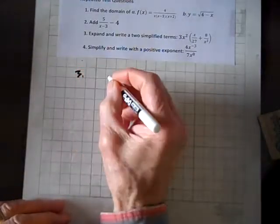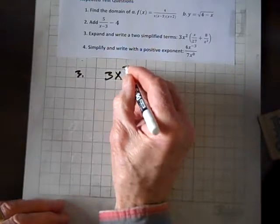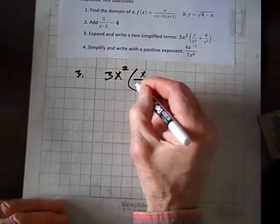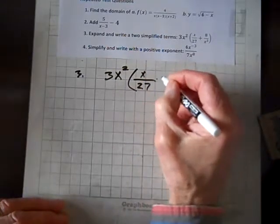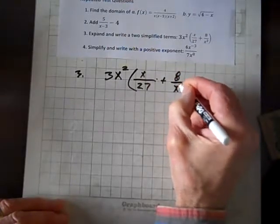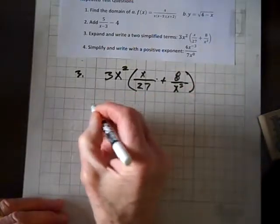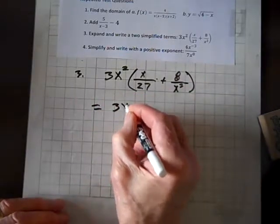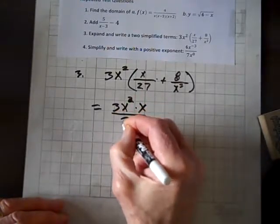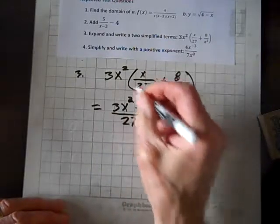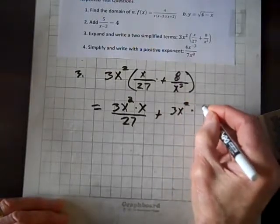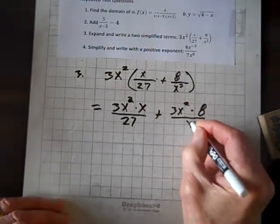Okay, let's do the next one. We've got to expand this. So this is three. We've got to expand this and write as two separate terms that are simplified or reduced. So here's what we'll do. Distributive property says we have 3x^2 times x all over 27 plus, and now I multiply this 3x, 3x^2 times 8, and that's over x^3.